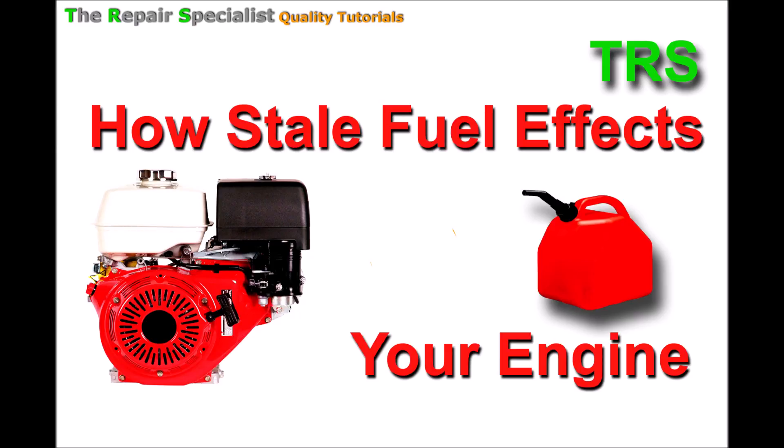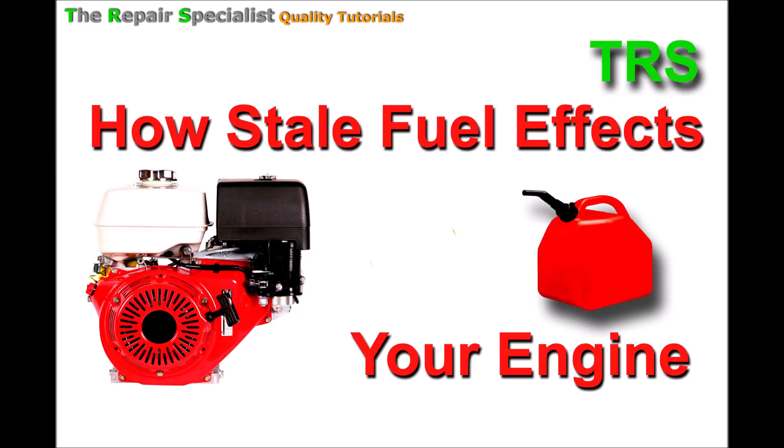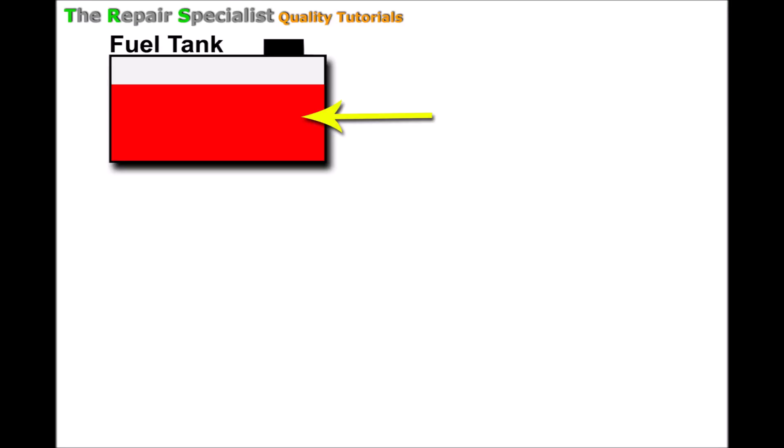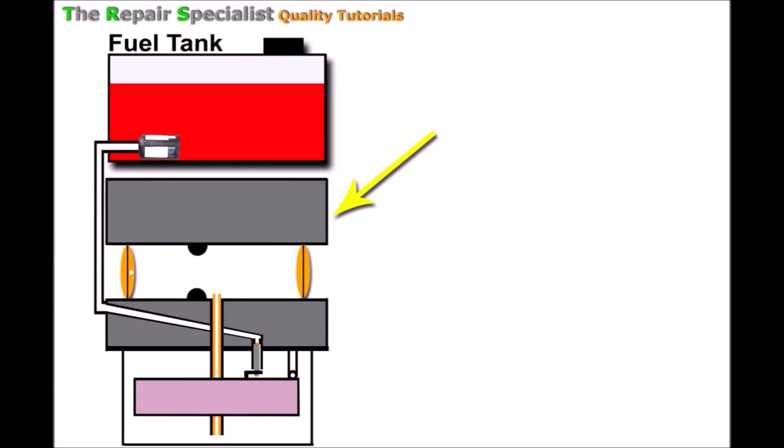So let's get started and I'll begin by laying out a diagram here so we can see everything systematically from the fuel tank, fuel lines, through to the carburetor and through to the engine. So we'll start off, we've got the fuel tank here with some fuel in it, a fuel filter, and a fuel line coming off there.